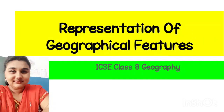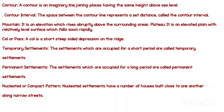Welcome to another video of ICSE Class 8 Geography. Today's topic is the presentation of geographical features. In our previous class, we already covered the first topic of this chapter, where we discussed a few important terms: contour, contour interval — a contour is an imaginary line joining places having the same height above sea level — and we also discussed contour interval, mountain passes, and settlement, though we did not go through a detailed explanation of settlement.